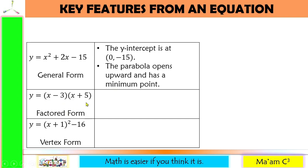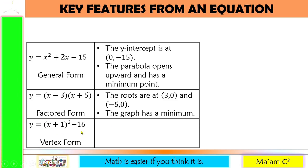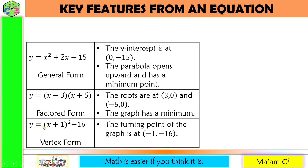The factored form can give us the roots of our parabola. Setting each factor to zero: x minus 3 equals 0 gives x equals 3, and x plus 5 equals 0 gives x equals negative 5. So the roots are (3, 0) and (negative 5, 0). Since a is positive, the parabola opens upward and has a minimum. The vertex form gives us the vertex, which is h and k — the turning point of the parabola. The vertex here is (negative 1, negative 16), and since a is positive, the parabola opens upward with a minimum.